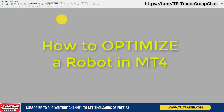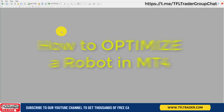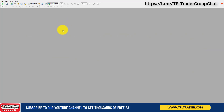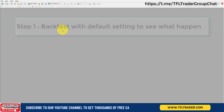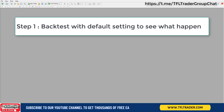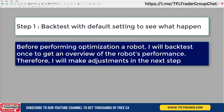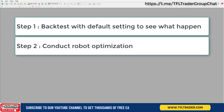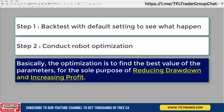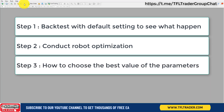Now back to our main topic today: how to optimize a robot in MT4. We will have 3 steps. Step 1: backtest with default settings to see what happens — before performing optimization, I will backtest once to get an overview of the robot's performance. Step 2: conduct robot optimization — the optimization is to find the best value of the parameters, for the purpose of reducing drawdown and increasing profit. Step 3: how to choose the best value of the parameters.